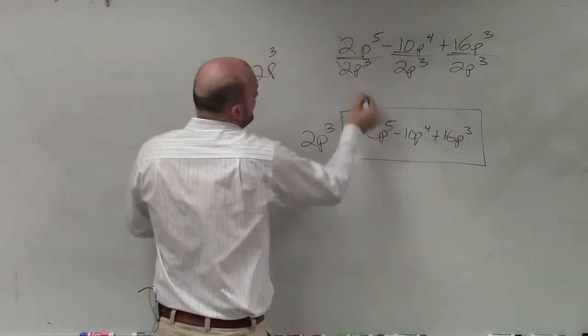Because I'm asking you, 2p to the third times what gives you this? So take your GCF and divide every single term by 2p to the third. And what you get is p squared minus 5p to the first plus 8p to the 0, which is 1.